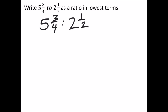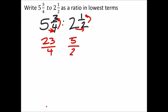What I'm going to do is change both of these into improper fractions first. So I got 5 times 4 plus 3, that would be 23/4. 2 times 2 plus 1 is 5/2.